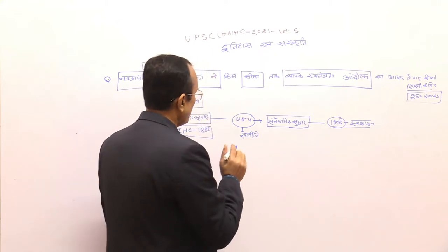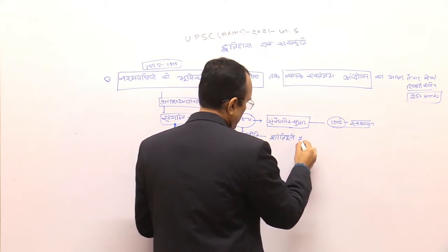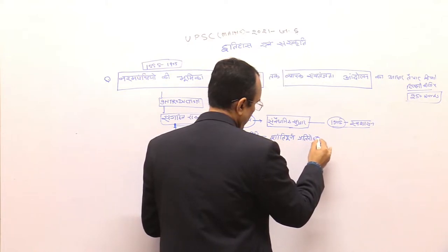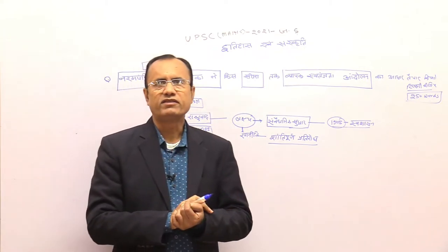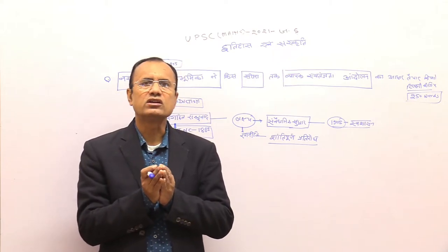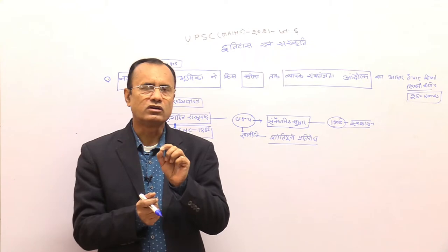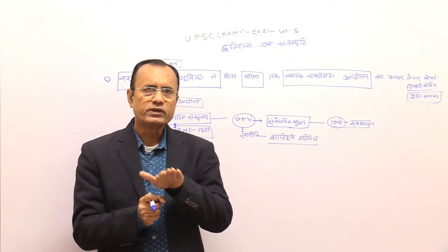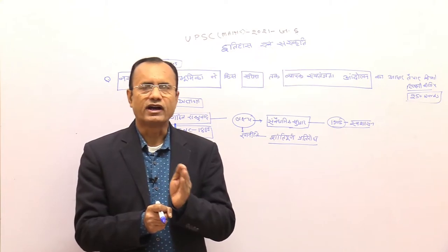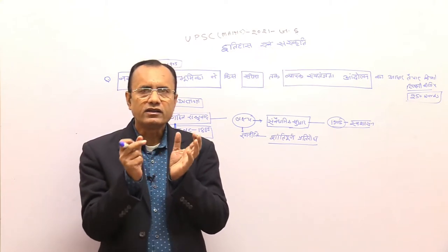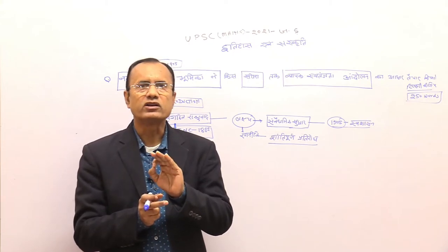दूसरा इनकी रणनीति जो थी शांतिपूर्ण प्रतिरोध की रणनीति। जिस से राष्ट्रवाद का विकास कर रहा है उस राष्ट्रवाद के विकास में इन्होंने शांतिपूर्ण प्रतिरोध की नीति का औंसान किया था जिस से आवेदन निवेदन भी कहा जाता है। Peaceful movement का आधार हमारे नरमपंथी नेताओं ने develop किया बाद में Gandhi भी शांतिपूर्ण प्रतिरोध की नीति को स्वीकार करते हैं उसकी निरंतरता Gandhi के व्यापक जनराष्ट्रवाद जो है उस में दिखाई देती है और इसलिए यहाँ भी इनकी भूमिका को हम नजरअंदाज नहीं कर सकते हैं।